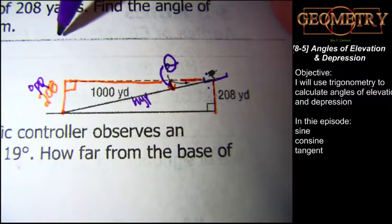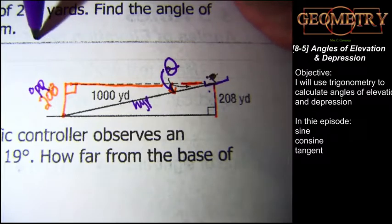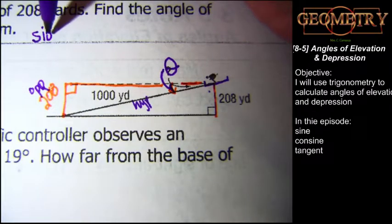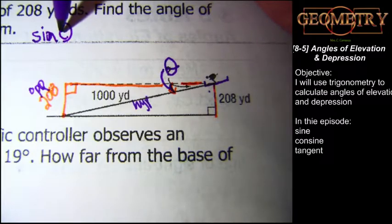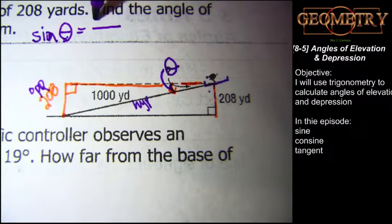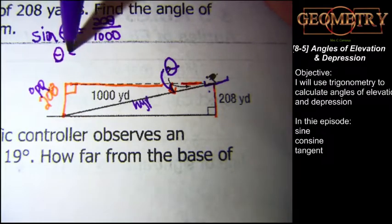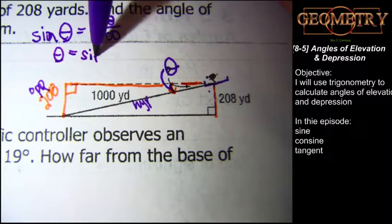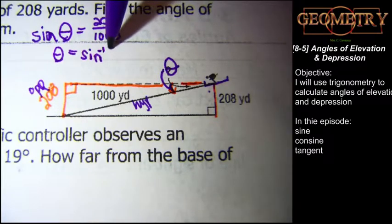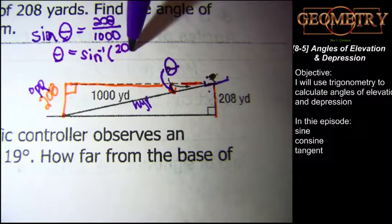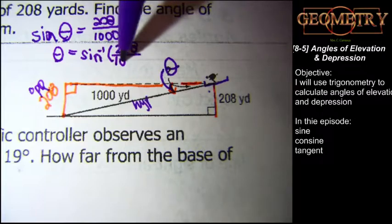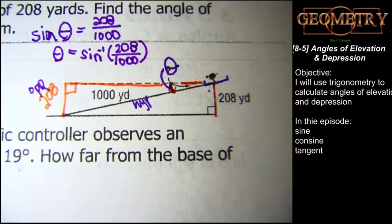Sine. Use an opposite and hypotenuse. Sine of theta equals opposite 208 over 1000, which is my hypotenuse. How are we looking for the theta? That's the only variable in this thing. Well we can do the arc. Exactly. We want to undo the trig function of sine. So we're going to use its opposite, its inverse, which is also called the arc sine. And so when we go into our superhero calculator, we'll type that.